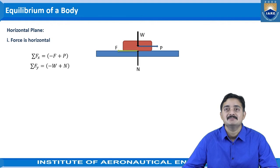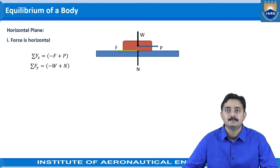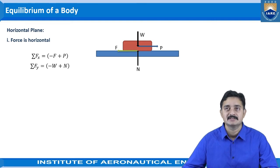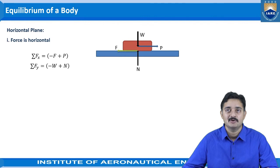For sigma Fy, the vertical components of forces, in the free body diagram we observe two vertical forces: the normal reaction N acting upwards and the weight of the object acting downwards. We write the vertical force summation as sigma Fy equal to minus W plus N. Minus W is written because the weight W acts vertically downwards in the negative y-axis direction.